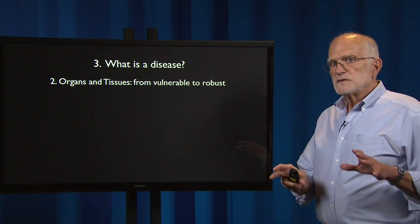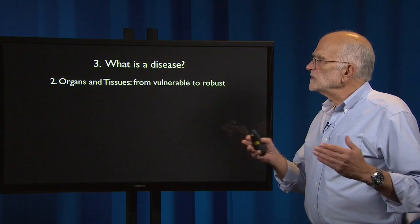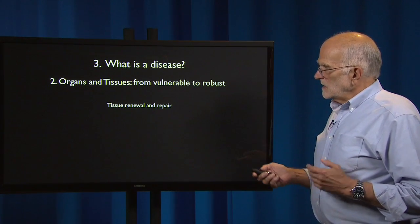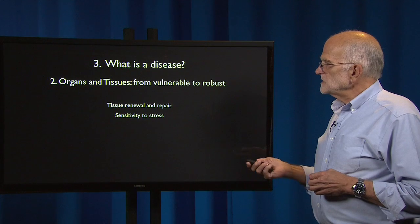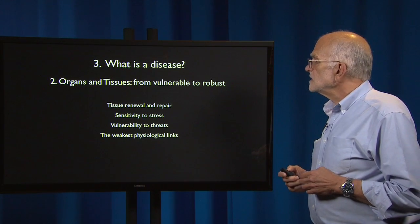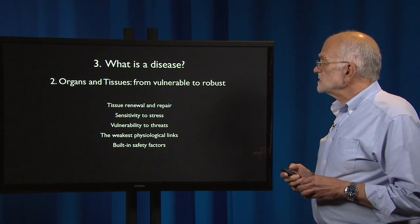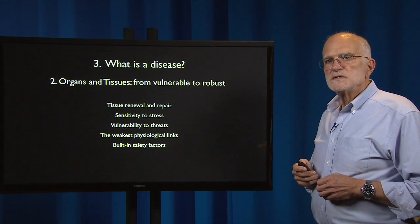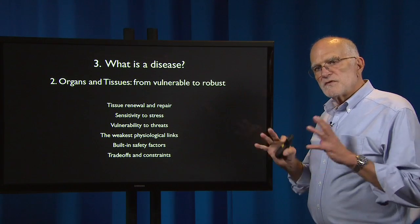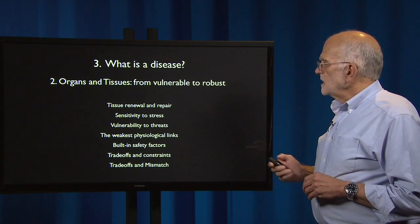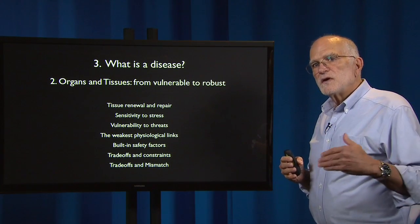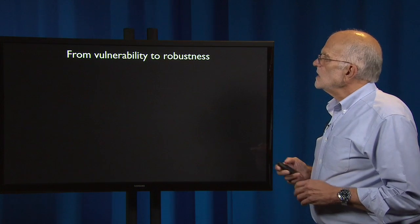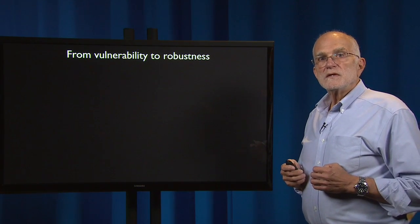Part of the nature of disease is determined by the distinction between organs and tissues that are either more vulnerable or more robust, and organs and tissues differ considerably in that respect. This has to do with tissue renewal and repair, sensitivity to stress, vulnerability to threats, which tissues are the weakest physiological links, and the fact that evolution has designed different tissues and organs to have different built-in safety factors. All of this occurs within a framework of trade-offs and constraints, and it also occurs because trade-offs leave us exposed to mismatches which reveal the costs of the trade-offs. So let's consider this spectrum from vulnerability to robustness.